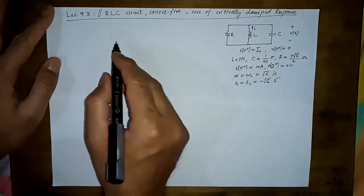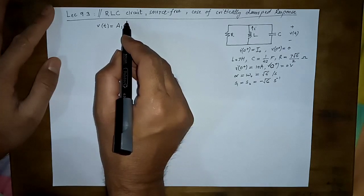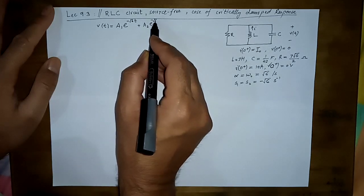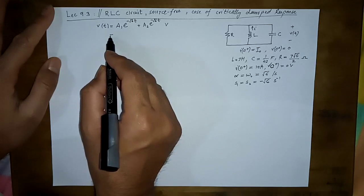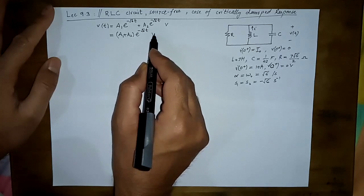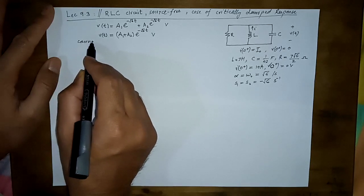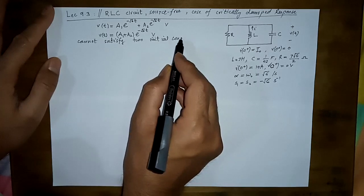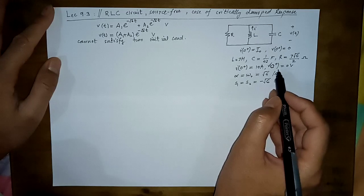Since s1 and s2 are now equal, this is the critically damped case. The voltage would be equal to A1·e^(-√6·t) plus A2·e^(-√6·t). However, there is a problem: this is essentially equivalent to a single constant (A1 + A2)·e^(-√6·t), call it A3. A single term like this cannot satisfy two initial conditions.